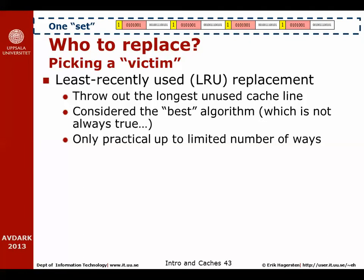In order to figure out which cache line has been unused the longest time, we have to add a little bit of history information to each set. This is often considered the best replacement algorithm, but as we'll see in a little while, this is not always the case. LRU replacement also requires this extra history information to keep track of what's going on with cache lines.